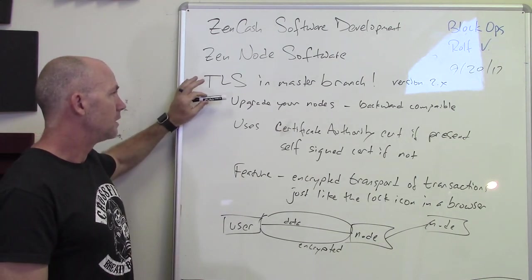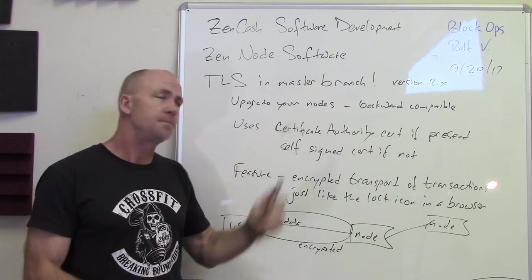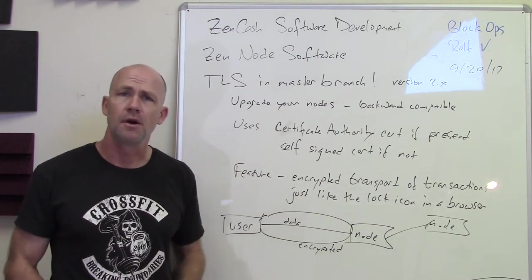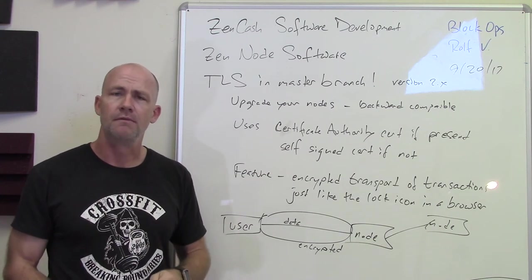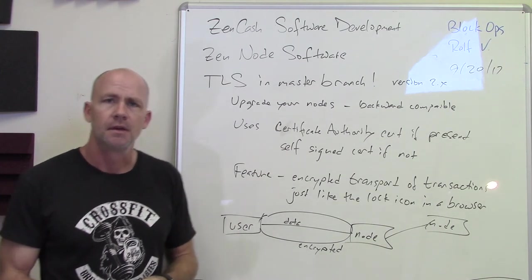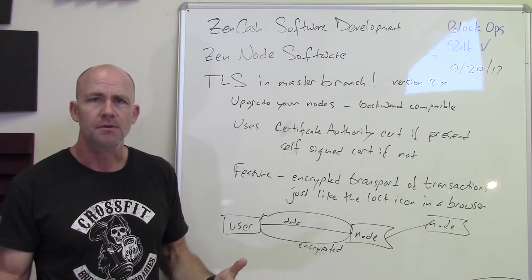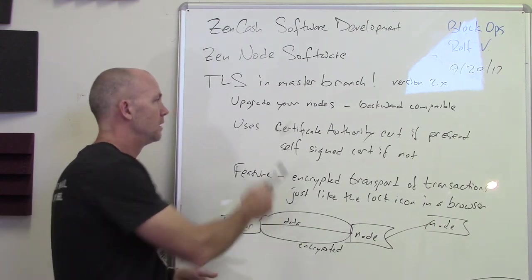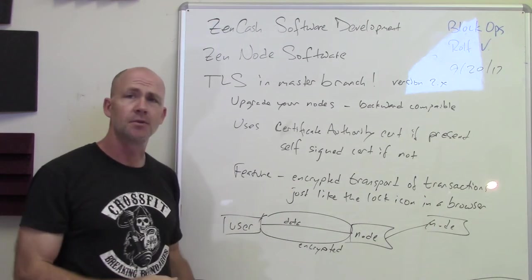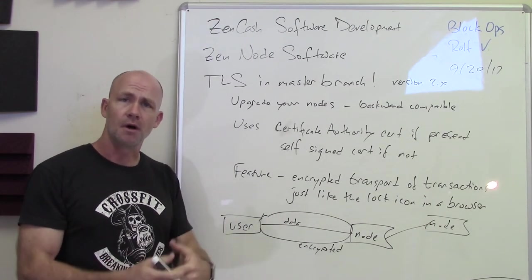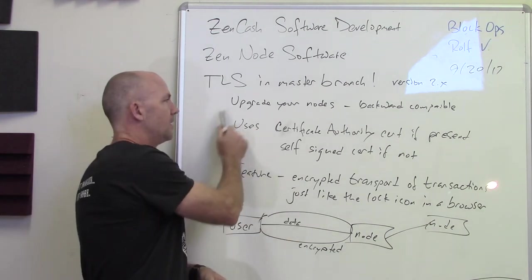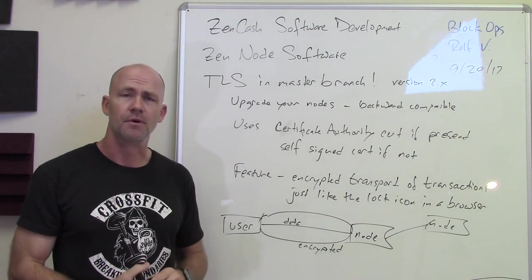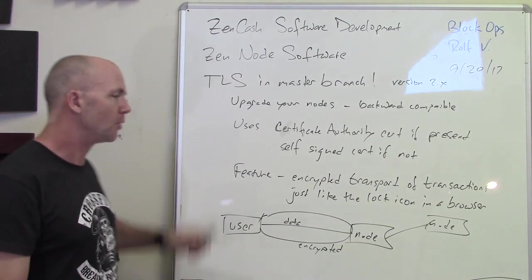Upgrade your nodes. It's backwards compatible, so there's no hard fork, no soft fork. As you upgrade your nodes, more and more of the Zencash nodes will be using encrypted transport. At some point in the future, we may enforce that nodes use it — but this is also why we use secure nodes, because all secure nodes, in order to be secure nodes, have to have a certificate authority certification and be using it for their Zencash network transport.